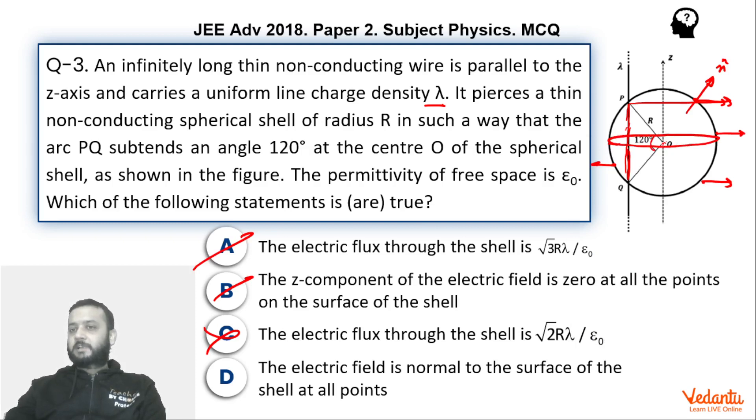If you consider a diametric plane which is horizontal and which contains zero-zero and which is like this, at all these points we can say electric field would have been normal to the surface of the shell. But at the other points, at this point electric field will be again in this direction but normal will not be in this direction. So option D is wrong.